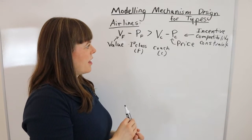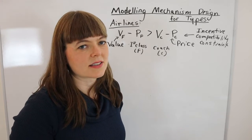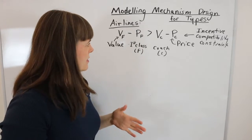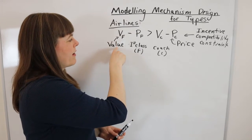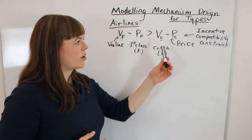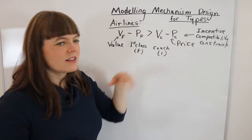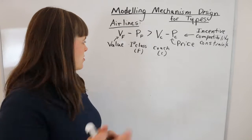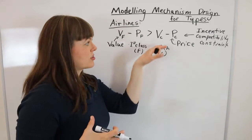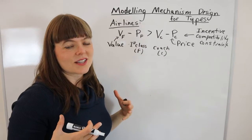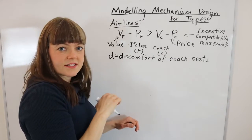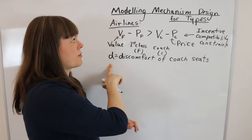Now I want to think about how to add complexity to this problem — specifically, which assumptions am I annoyed with. I'm annoyed with how simple 'value' is: value to the first-class passenger. Why do they value the first-class ticket more? It's because coach seats are really uncomfortable. So I'd like to define a variable for how uncomfortable the airline needs to make coach seats in order to push first-class customers into first class. I've defined this as 'discomfort of coach seats,' and it will become a choice variable for the airline.